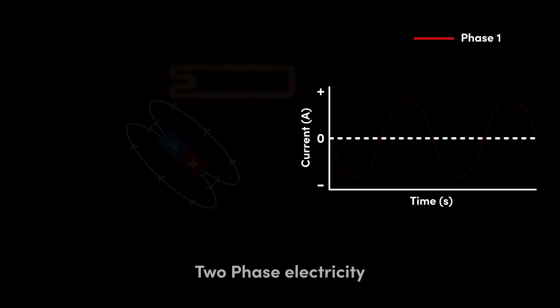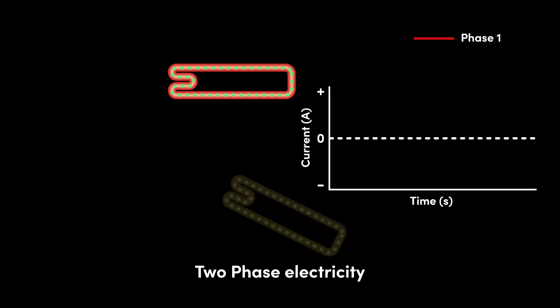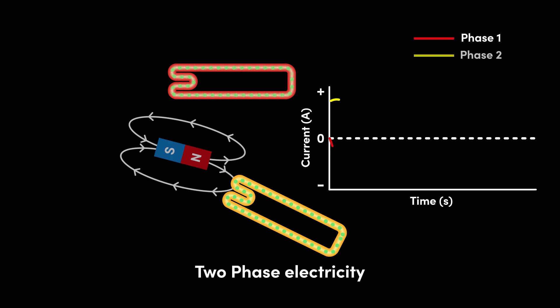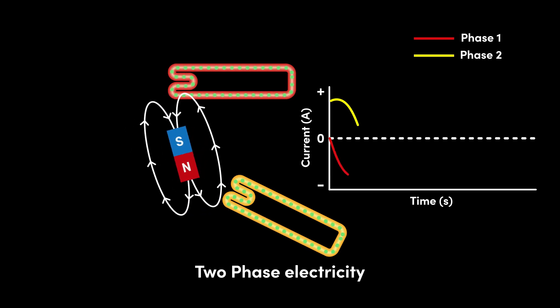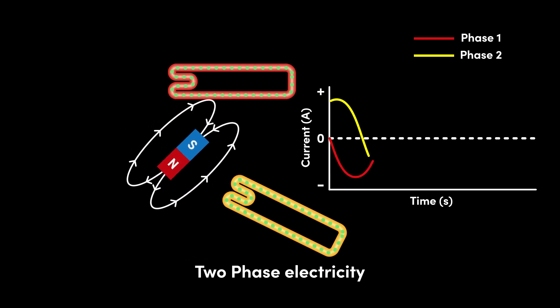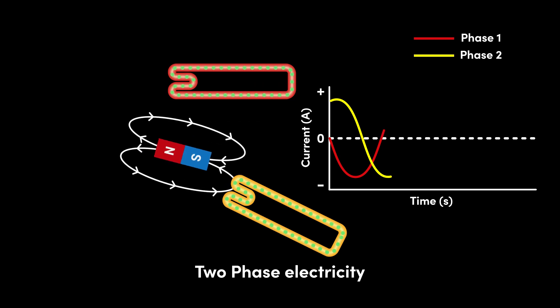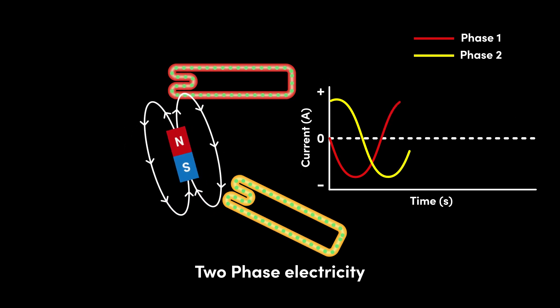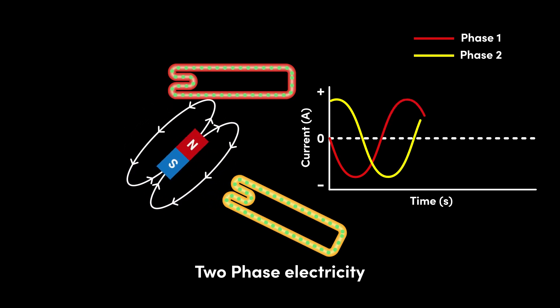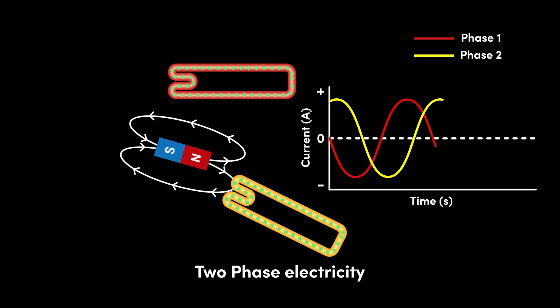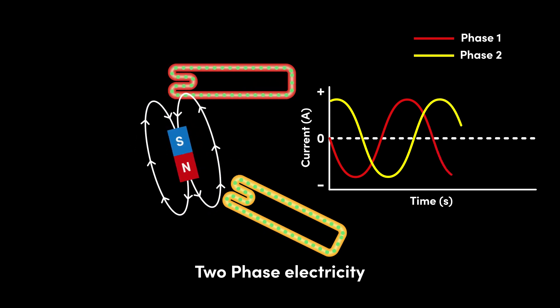Two phase electricity is generated when we introduce a second coil at 120 degrees to the first coil. The second coil also produces its own sine wave of alternating current, giving us two phases. Notice for the two coils, the current reaches its maximum positive and maximum negative values at different times, since a given pole of the magnet cannot be next to both coils at the same time.